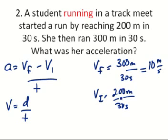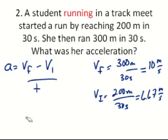And 200 divided by 30 is going to be 6.67 meters per second. We know have the values that we need in order to complete the other part of the equation, which is finding the acceleration.